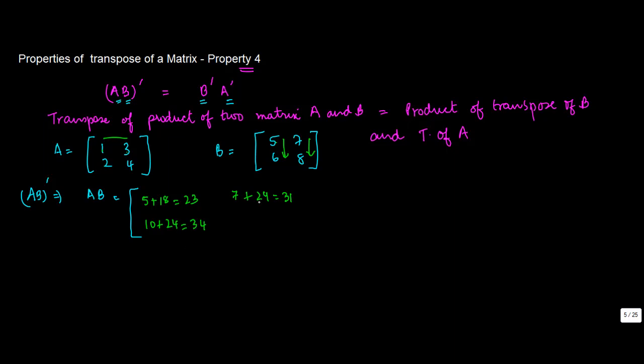2 into 7, 4 into 8. So you've got AB equals to 23, 31, 34, and 46.